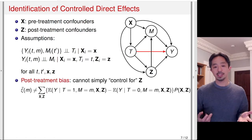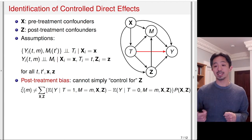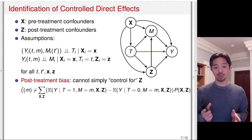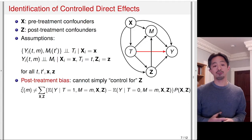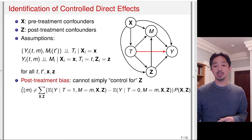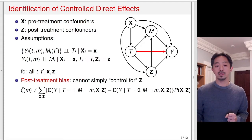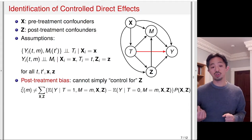In this case, one might think we can simply regress Y on T, M, X, and Z, and then interpret the coefficient for T as the estimate of the controlled directed effect. Unfortunately, that is not the case. This naive approach will suffer from something called post-treatment bias. When you have a confounder that is potentially affected by the treatment, you cannot simply control for it even though there is no unmeasured confounding, because that would induce post-treatment bias.